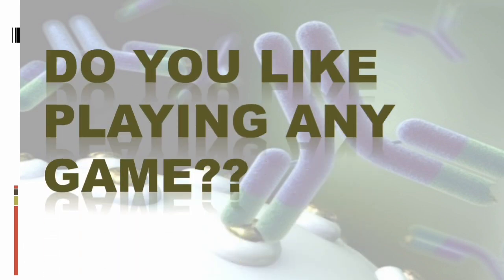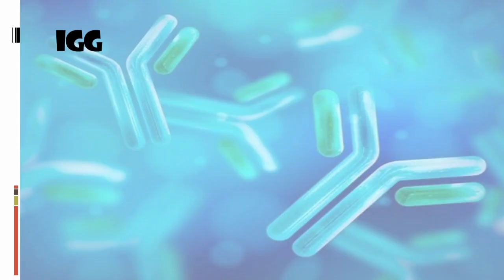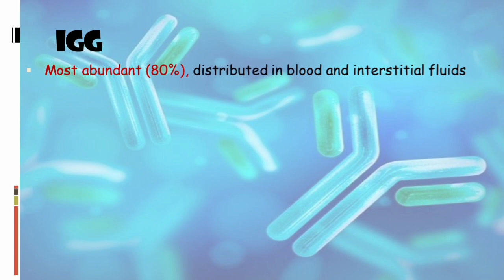Do you like playing games? Here in immunoglobulin, we will also play a game. The game is 'GAMED' — that is the five types of immunoglobulins: G, A, M, E, and D. Let us start with IgG. IgG is considered the most abundant, at 80%, and is distributed in blood and interstitial fluids.